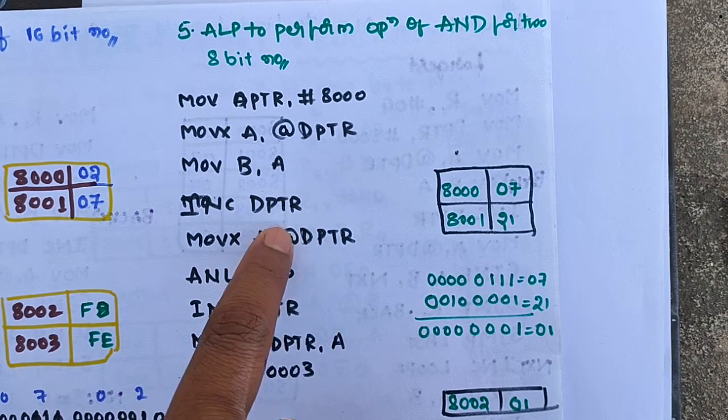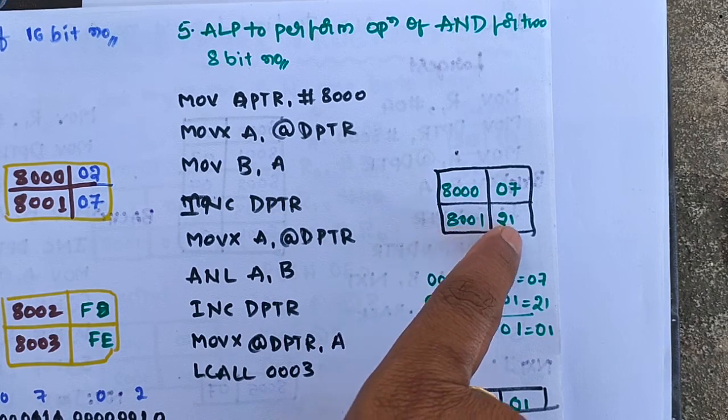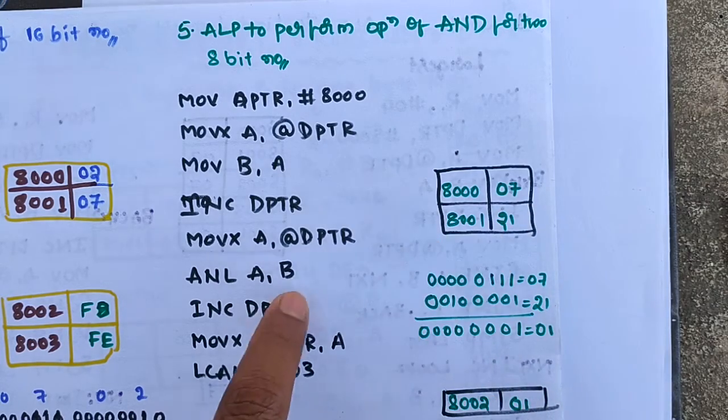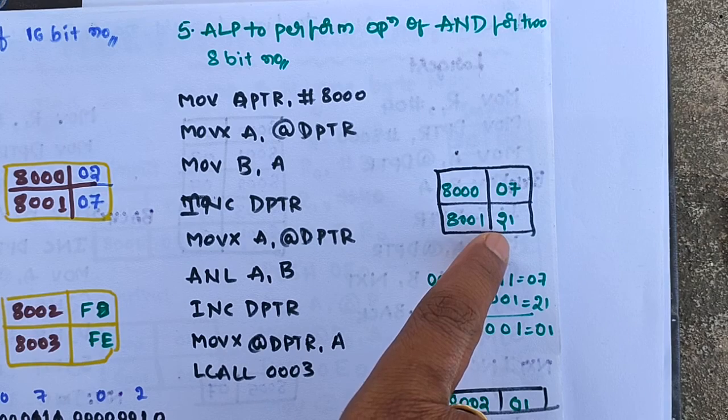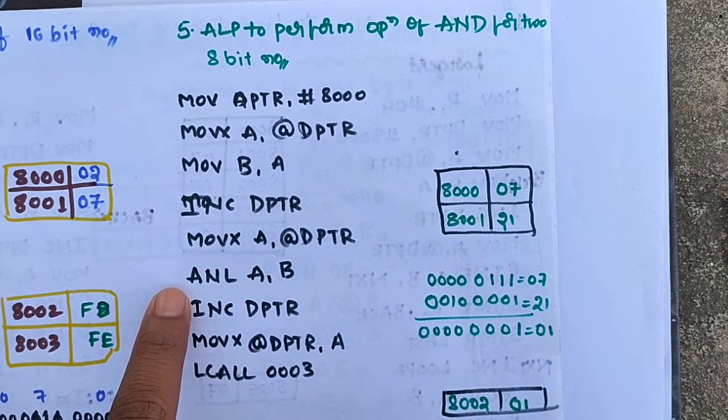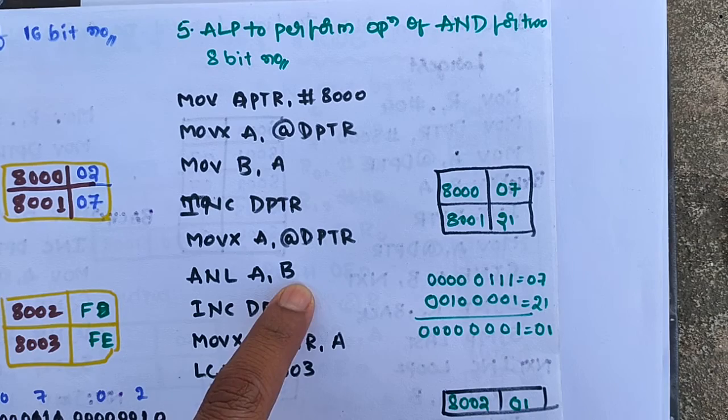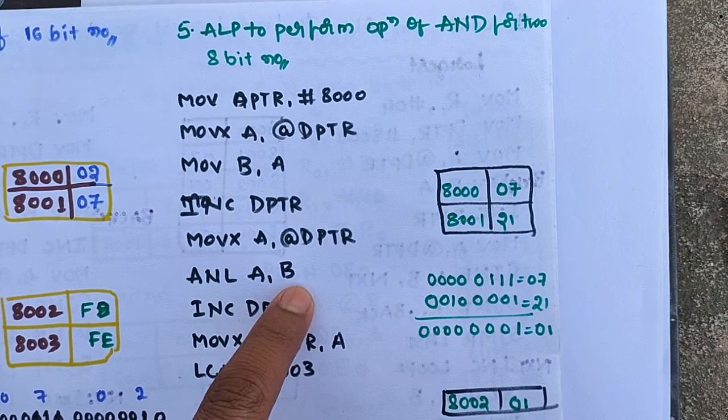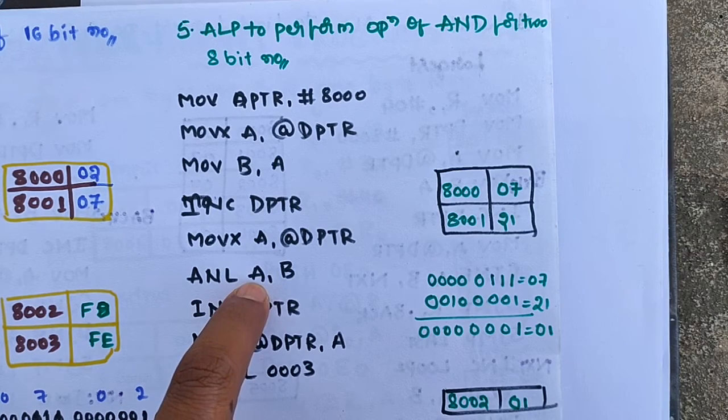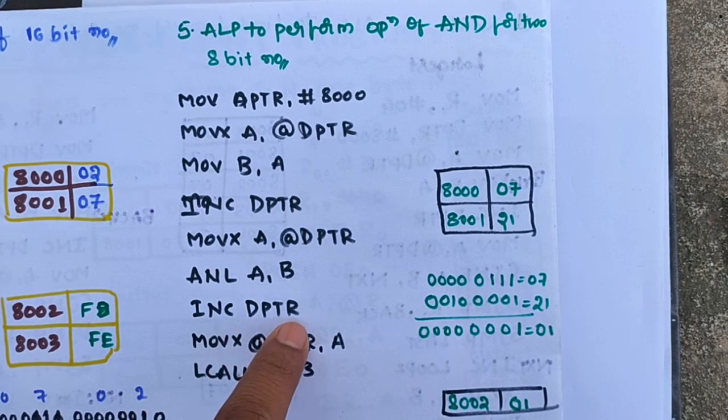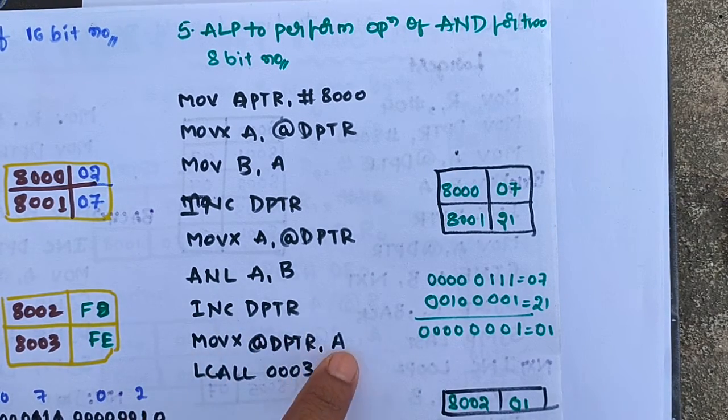Once incremented to 8001, we load the second byte to the accumulator. Now B has 07, A has 21. Perform the AND operation: ANL A, B. After the AND operation, the result is stored in the accumulator. Increment the DPTR and transfer the accumulator to location 8002.